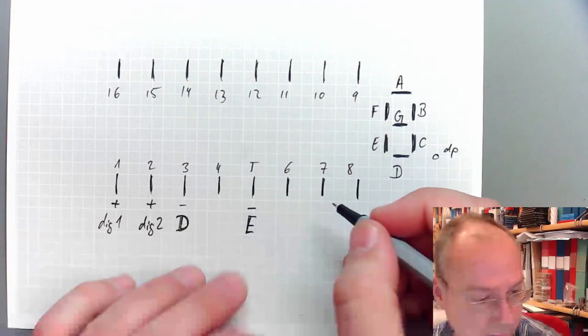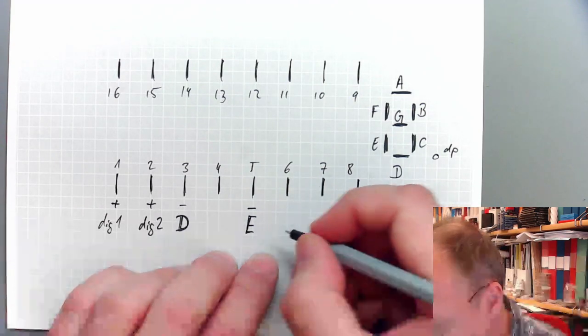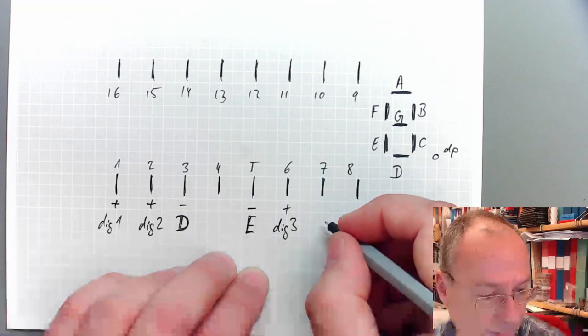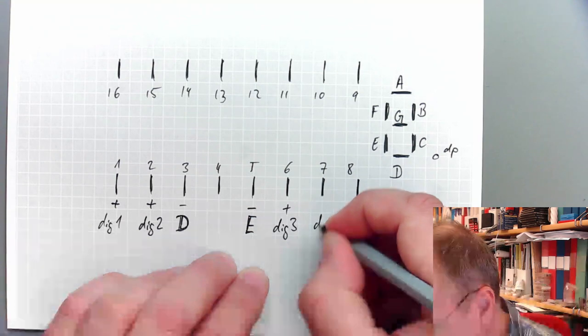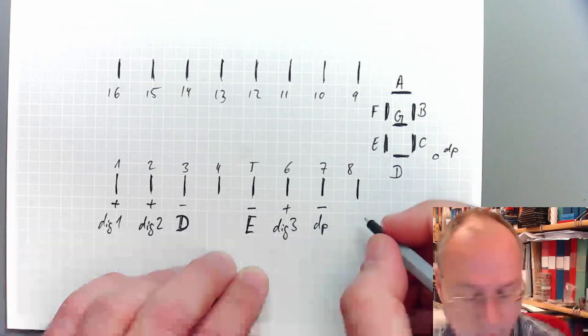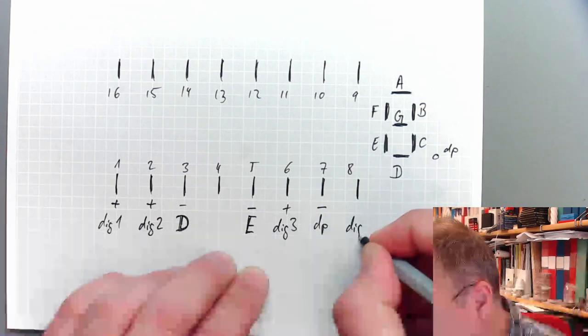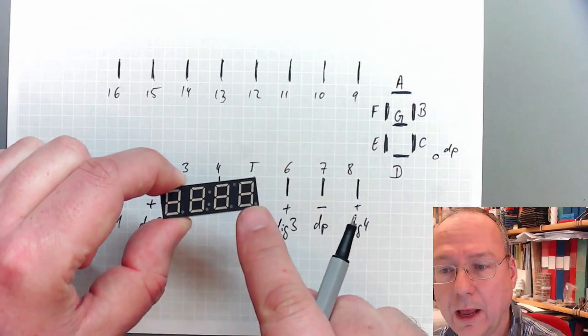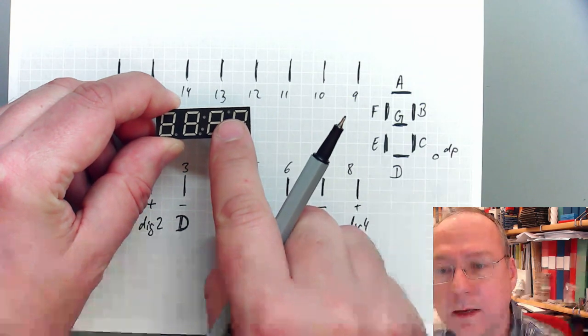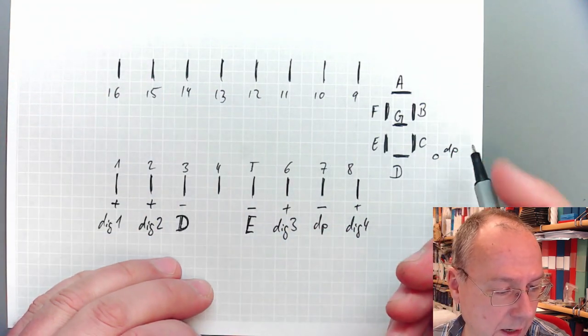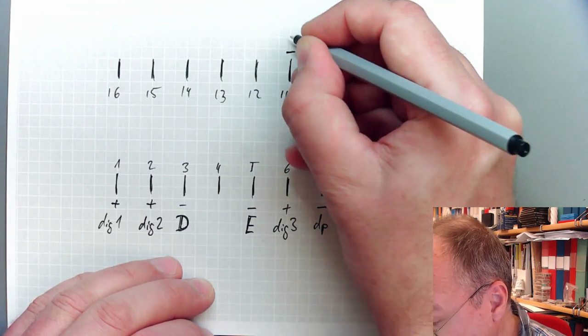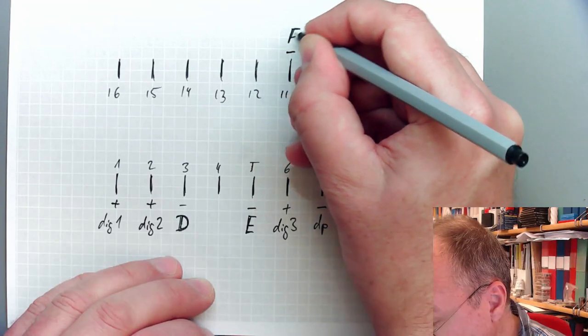Then comes pin number six, which is the positive side of digit number three. Number seven is our decimal point, the negative side, and then we have number eight here, which is digit four, the positive side of the last digit here. Number nine and ten are the upper LED here which we will ignore, and then comes eleven, which is the negative side of the segment F.